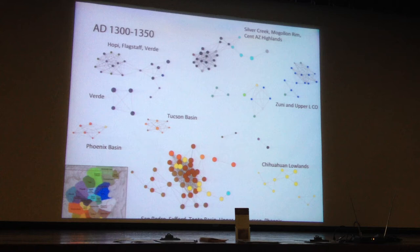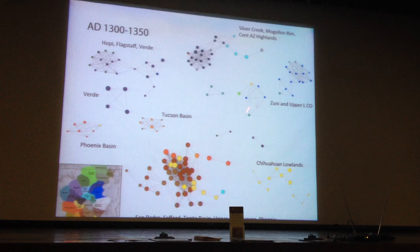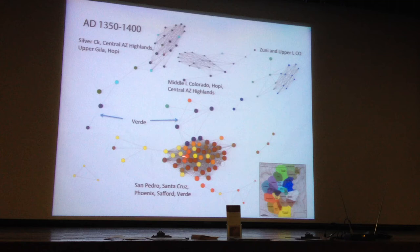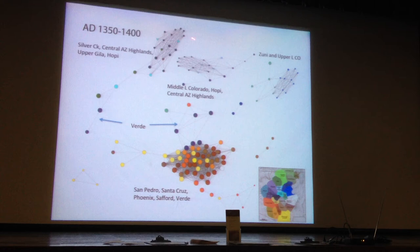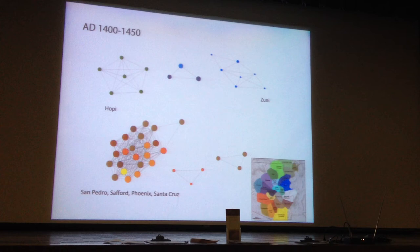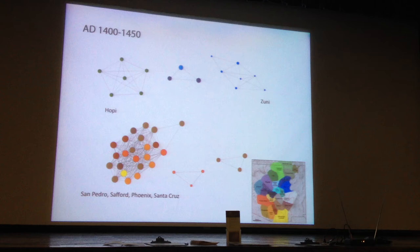From 1300 to 1350, and then 1350 to 1400, you see a lot of change. A bigger network is growing in the Southwest — kind of a feeding frenzy in the Hohokam area — with more nucleated coalescence happening up in the north. Then 1400 to 1450 shows a big contrast: Zuni, Hopi, and then one Zuni site — possibly Petrified Forest right in between — and then here's the big component for 1400 to 1450.